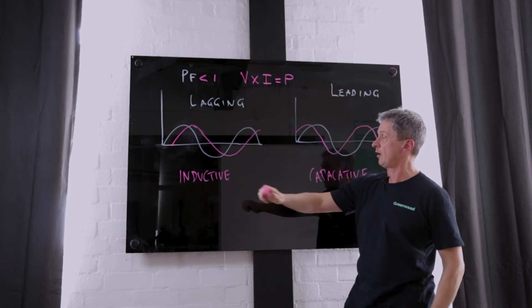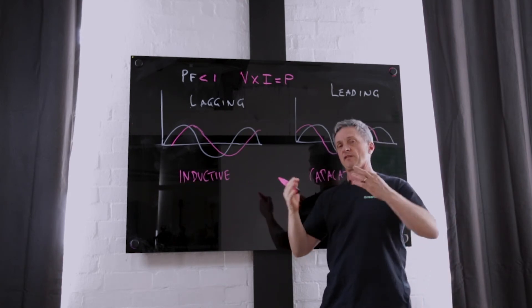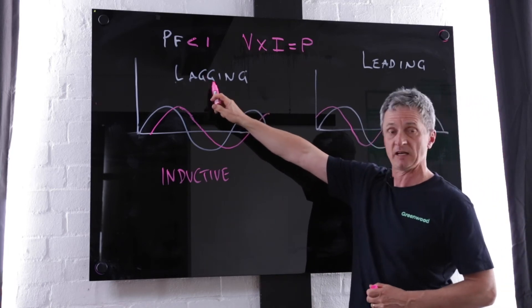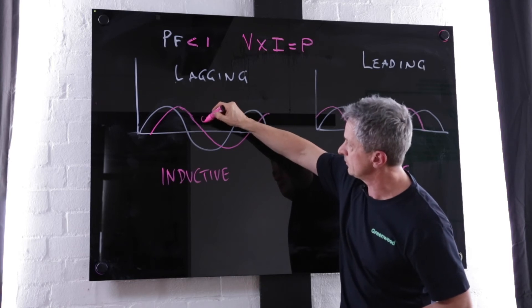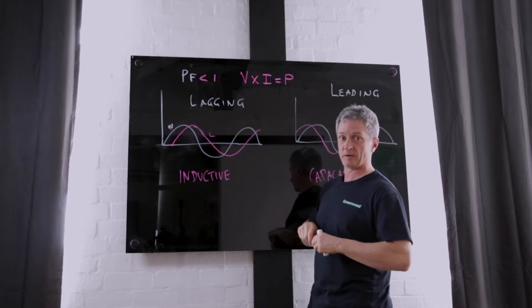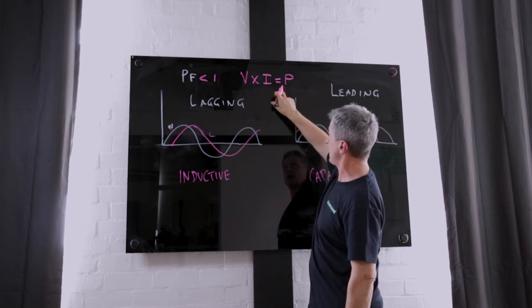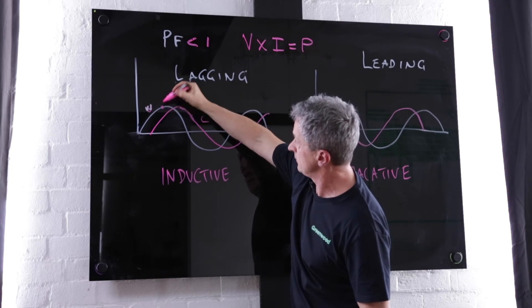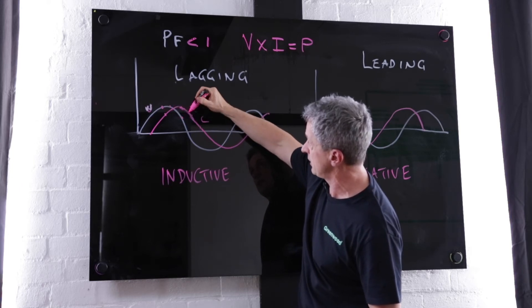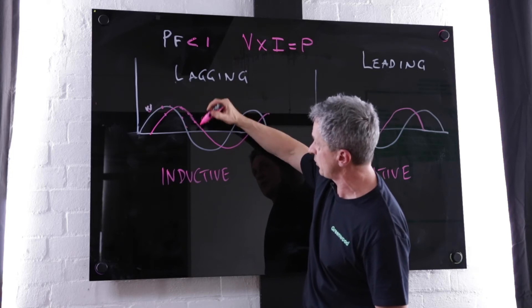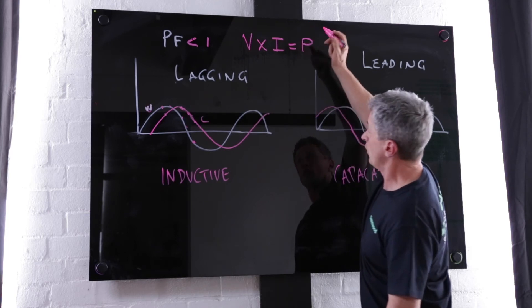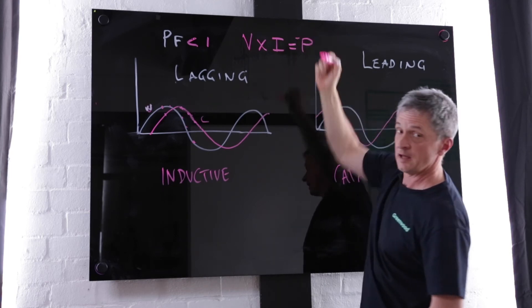In the case of a site with a lot of inductive loads — for instance, an engineering company with lots of three-phase motors — we have a lagging power factor. That means current is lagging the voltage. Now if we apply the principle of V times I equals power, we can see at certain points voltage times current is positive, but look when we get to this point here: voltage is negative, current is positive. That means we have negative power, and that's the reactive power.